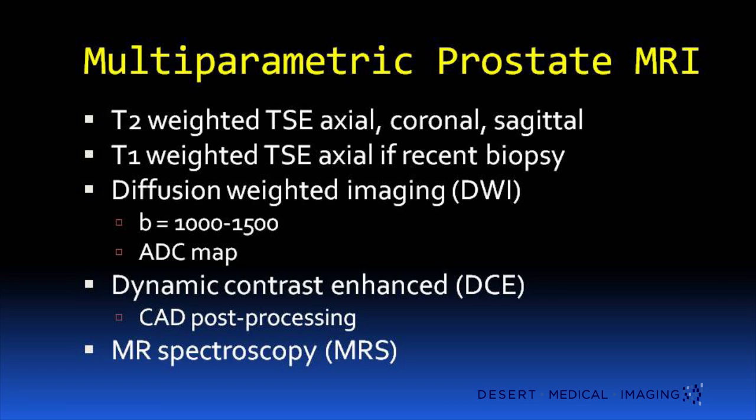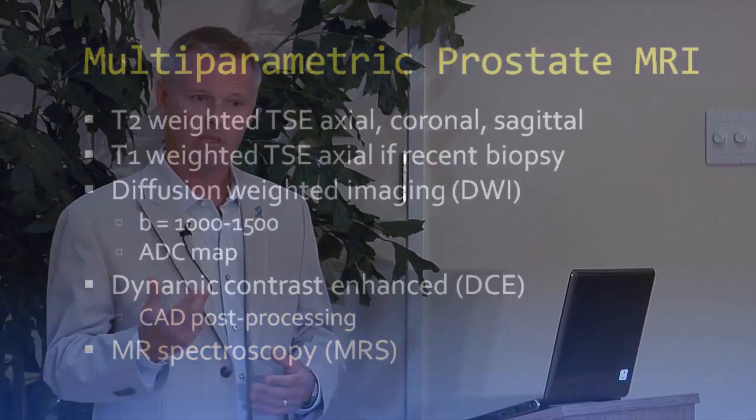We also do something called dynamic contrast-enhanced imaging. That's where we start an IV and give some contrast very, very quickly — just like what women get when they have a breast MRI, or similar to iodinated dye from a CAT scan. We take those pictures very, very quickly, getting between 1,000 and 2,000 images in just a few minutes, and send those to a fancy computer workstation for post-processing.